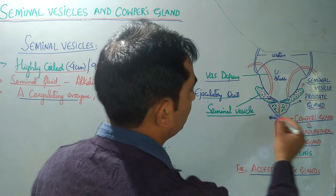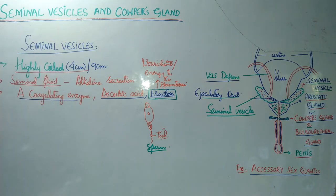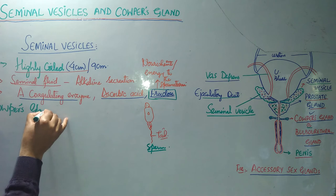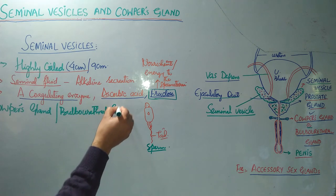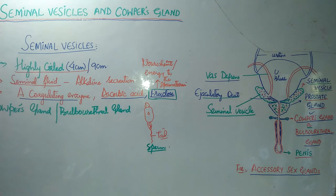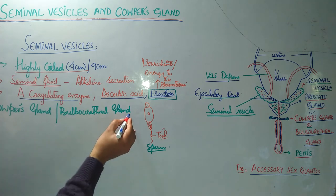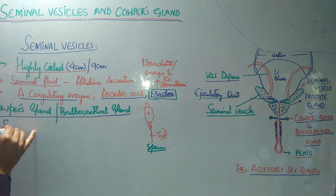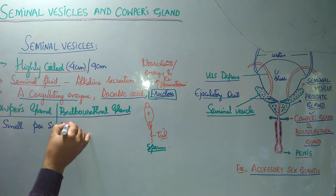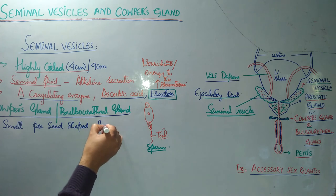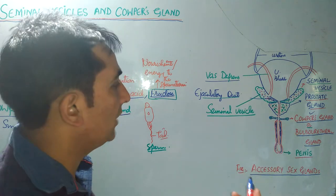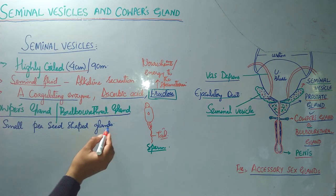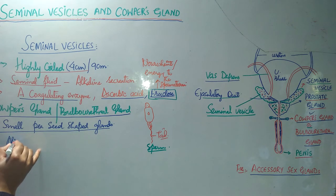Now we shall look at the Cowper's glands, also called bulbourethral glands. They are small pea-shaped and pea-sized glands, and they are two in number, one on either side. This is the exact location of the Cowper's glands in the diagram.